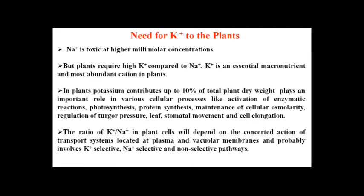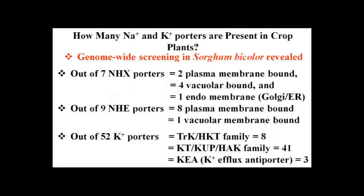Potassium is an essential macronutrient and the most abundant cation in plants. Plants' dry mass contributes nearly 10% potassium, and it is actively involved in various enzymatic reactions like photosynthesis, protein synthesis, cell elongation, and leaf stomatal movement. Under normal conditions, a high potassium-to-sodium ratio is required for a cell to perform its metabolic activities. The concentration of sodium and potassium in the cell depends upon sodium-selective, sodium non-selective, potassium-selective, and potassium non-selective pathways.